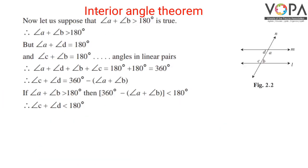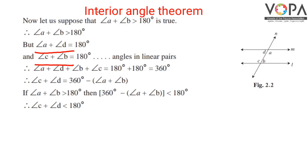Now suppose the second possibility — angle A plus angle B greater than 180 degrees — is true. We know that angle A plus angle D equals 180 degrees, and angle C plus angle B equals 180 degrees, because both pairs form linear pairs. Adding these equations, the left-hand sides add together: angle A plus angle D plus angle B plus angle C equals 360 degrees.